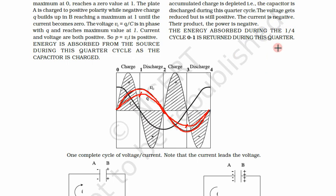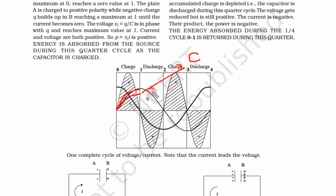Let us understand in terms of charge and discharge. When voltage increases, charge is increasing — this is called charging of the capacitor. When voltage decreases to zero, this is called discharging. When voltage reverses and starts increasing on the other side, the capacitor starts charging but on the opposite side — this is still charging.